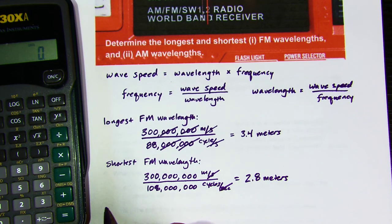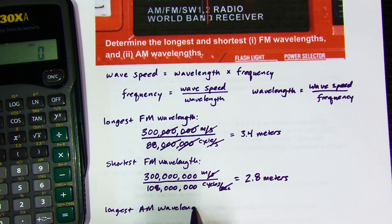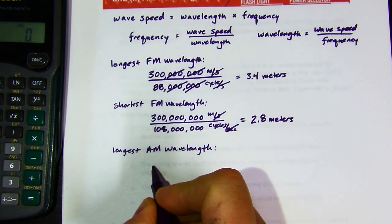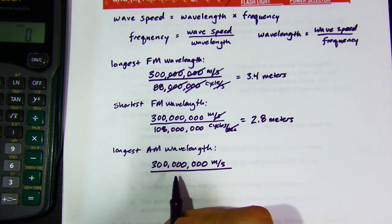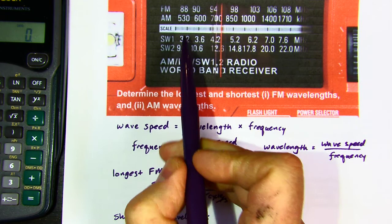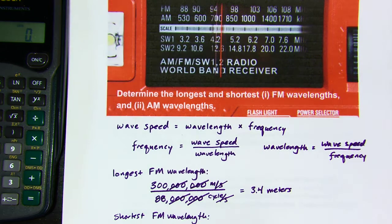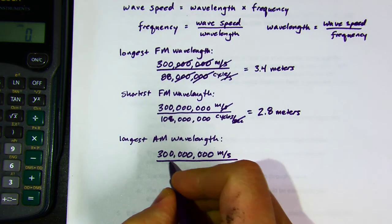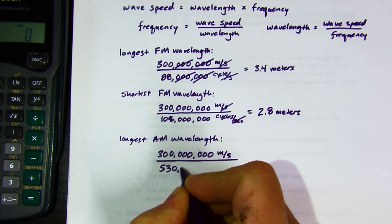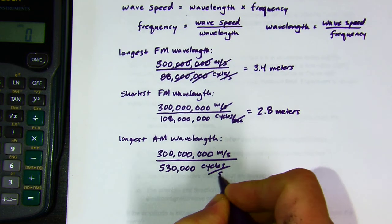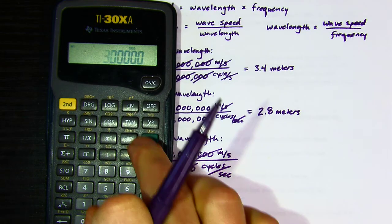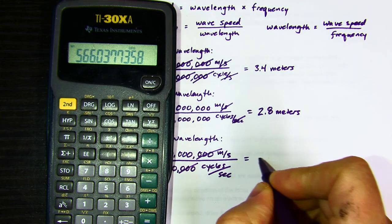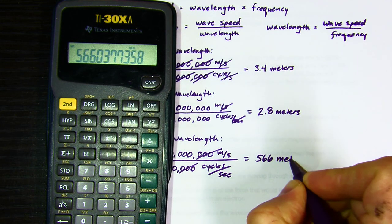If we do the same calculation for longest AM — exact same steps — my 300,000,000 meters per second for the speed, but now the AM band goes from about 530 up to 1710 kilohertz, which are thousands of cycles per second. Plugging in 530,000 cycles per second, I'm doing 300,000 divided by 530, and I get out of that 566 meters.